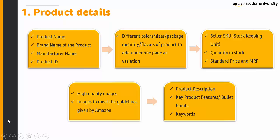Make sure to have high quality images that meet the guidelines given by Amazon. Also prepare the product description, key product features in bullet points, and keywords. All this information will reflect to the customer on the product detail page for them to purchase the product.